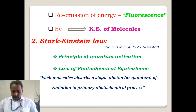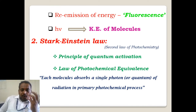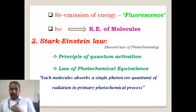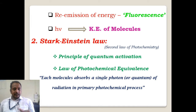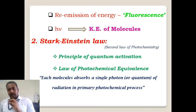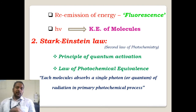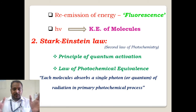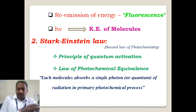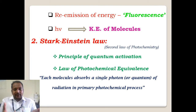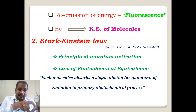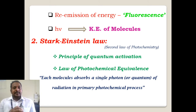To summarize, Grotthuss-Draper's Law states: only those radiations absorbed by a reaction system are responsible or effective for carrying out a chemical change; light which is reflected, transmitted, or scattered is not responsible. The first significance is that photochemical change is observed only due to absorption of light. The second significance is that not all absorbed light is responsible for a photochemical change — some is used for kinetic energy and some for fluorescence. It is also not the case that only a specific fixed fraction of rays carries out the photochemical change.